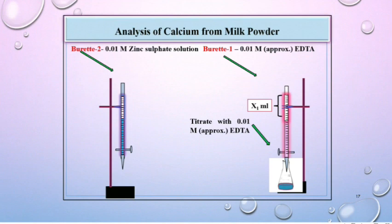To the same flask, add 1 ml of 0.01 molar zinc sulfate solution from burette No. 2 and continue the titration with burette No. 1. That will give you X2 ml. Similarly, do the titration for X3 ml.